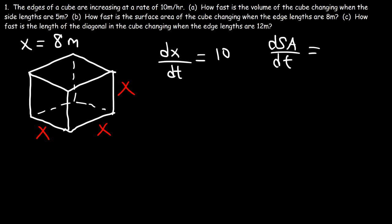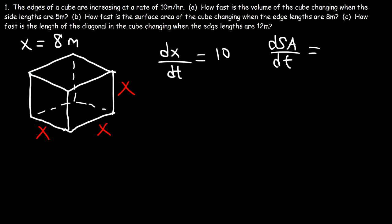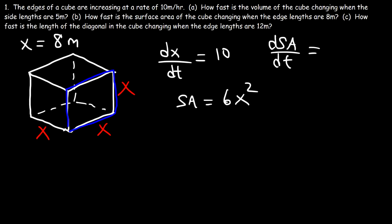First we need to come up with an equation that relates the surface area of a cube to x. The surface area is the area of all six sides: there's a front and a back (two sides), one on the left and one on the right (four sides), plus the bottom and top face — six faces total. The area of each face is x squared, so the surface area is 6x².